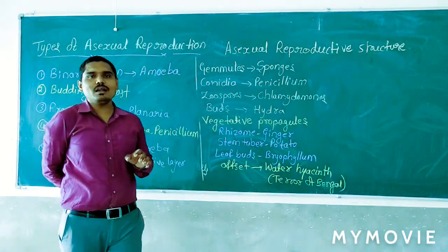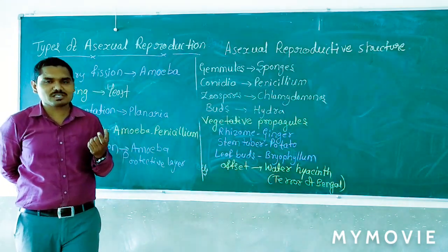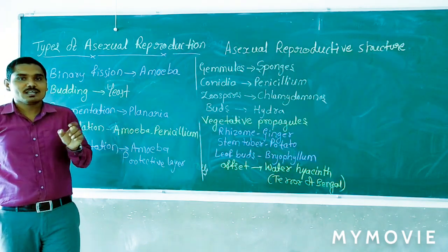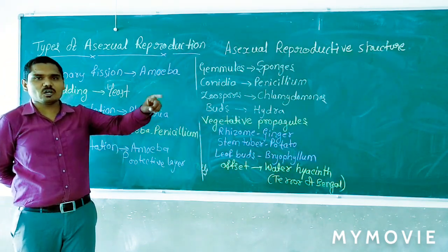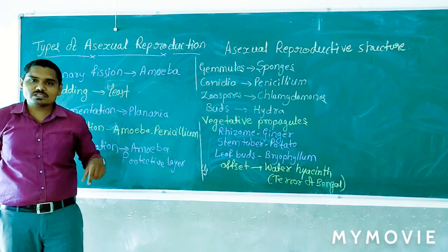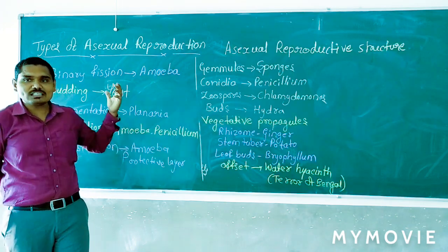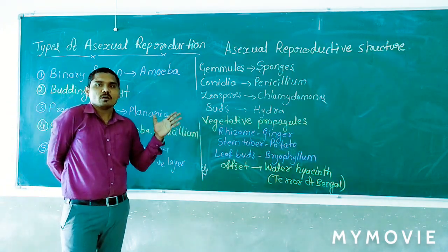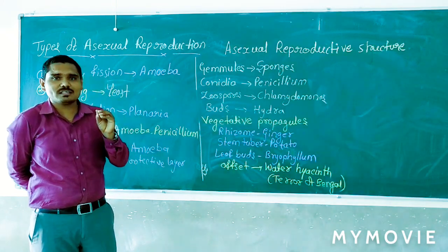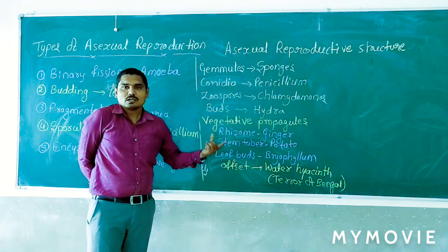Commonly, flower-producing plants produce flowers, after flower formation they produce fruits, and those fruits give rise to seeds. These seeds get the ability to form a new plant. However, there are some plants that can grow a new plant without seeds — that process is called vegetative propagation. The structures involved in vegetative propagation are called vegetative propagules.